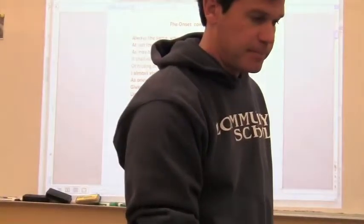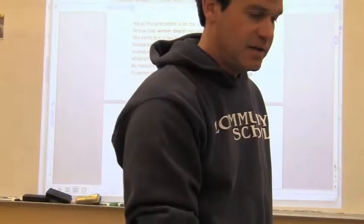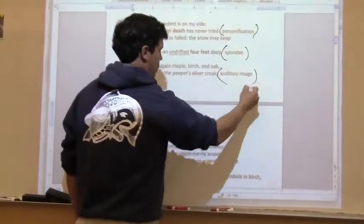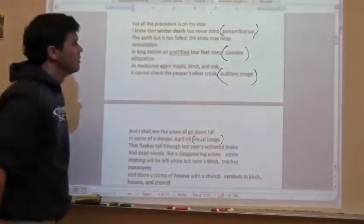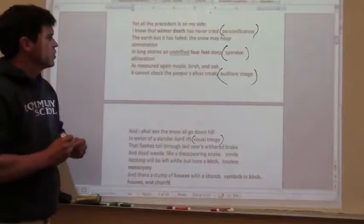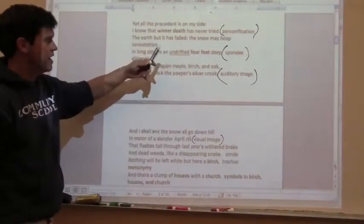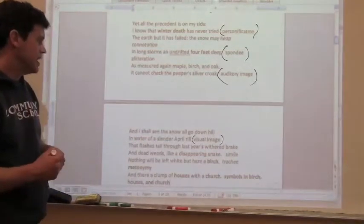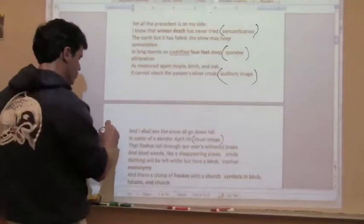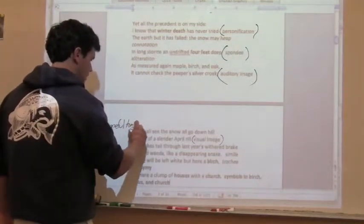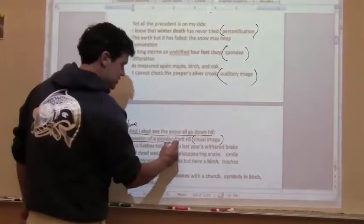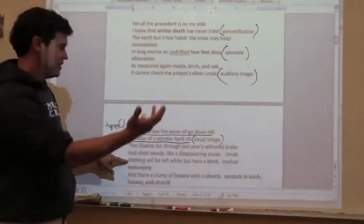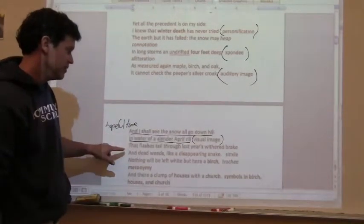But then we get a change in tone, a change in idea in the last stanza. So we know it's still more of a dejected tone—the winter death is coming, undrifted four feet deep is coming against the maple, birch, and oak. But then it shifts in tone, and he says, sort of hopeful, I would say in a hopeful tone: I shall see, I know, that the water of a slender April rill that flashes through last year's withered brake and dead weeds like a disappearing snake—he knows that all of that snow mound will result in nothing but a slender April rill. Great visual image.